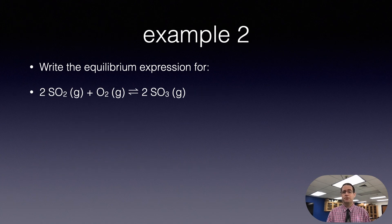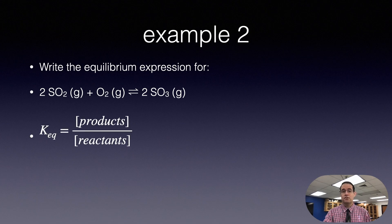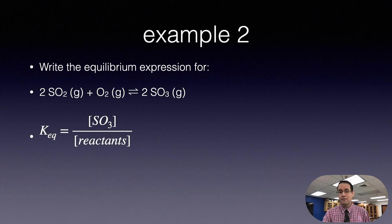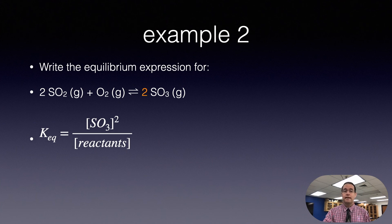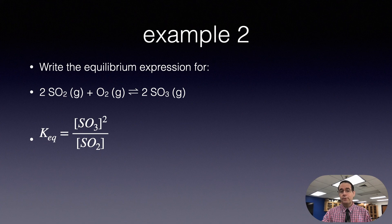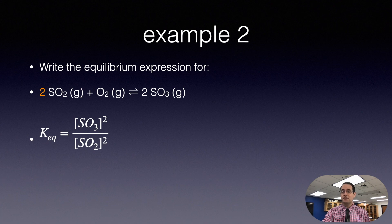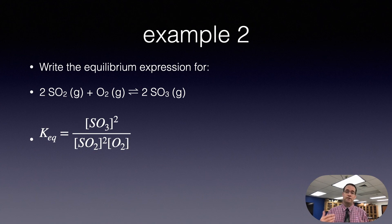Example two: write an equilibrium expression for sulfur dioxide reacting with oxygen to form sulfur trioxide. Products are on the right, so we have [SO3] squared — squared because the coefficient is two in the balanced equation. The reactant SO2 is also squared because of its coefficient of two. Oxygen is raised to the first power; we don't write ones in chemistry, so it simplifies to just [O2].